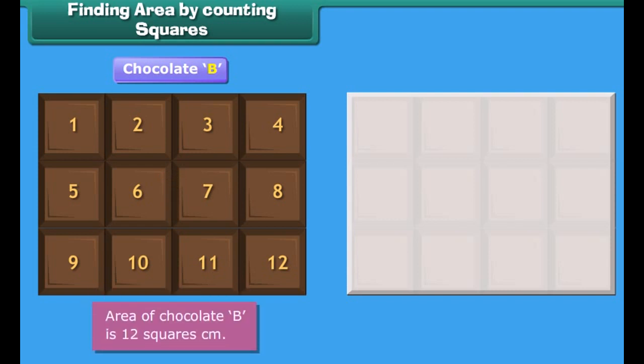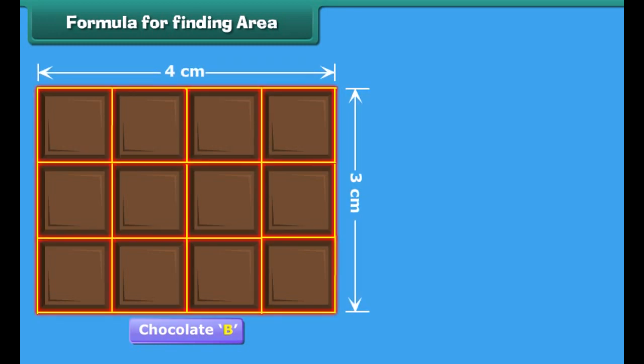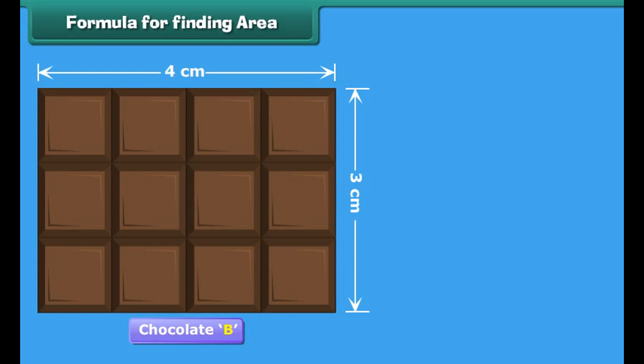Now, let us find the area of chocolate B. The length of chocolate B is 4 cm. Its width is 3 cm. So, 4 squares can be arranged along its length and 3 squares can be arranged along its width. In total, 12 squares can be arranged on this chocolate. Can you tell what would be its area? Very easy, it's 12 cm². So, among chocolates A and B, chocolate B is bigger in size.